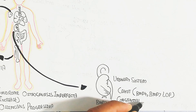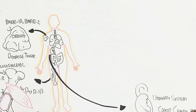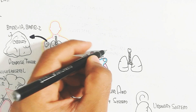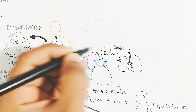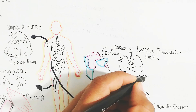In the urinary system, decreased BMP7, and BMP4/BMP7 loss of function, leads to congenital abnormalities of the kidney and urinary tract dysfunction. In the cardiovascular and pulmonary system, decreased endoglin and loss of function of BMPR2 receptor leads to pulmonary arterial hypertension and other disorders.